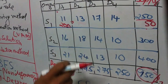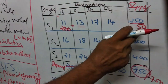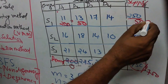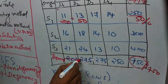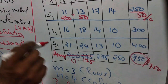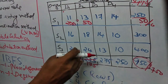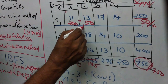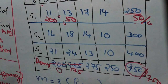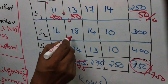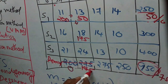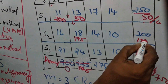Moving to the next cell: demand is 225, supply is 50. Allocate maximum possible, which is 50. Supply is reduced to zero and demand becomes 175. Then move to the next cell. The demand is 175 and supply is 300. Allocate maximum possible, which is 175. The demand is satisfied and the balance supply is 125.